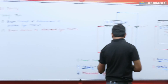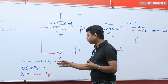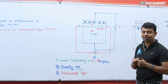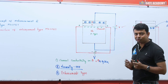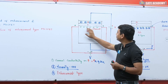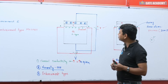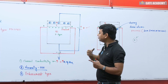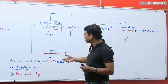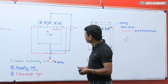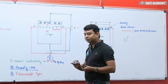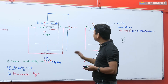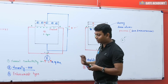We are calling the first one enhancement type MOSFET, and it is normally off. Why is it called normally off? Because the electron concentration is very low, so theoretically we can say the conductivity of this particular channel is very less. If conductivity is very less, resistivity will be high. By the application of this potential only — the magnitude of current will become zero. To turn it on, we need to apply an external voltage. That's why it is called normally off.